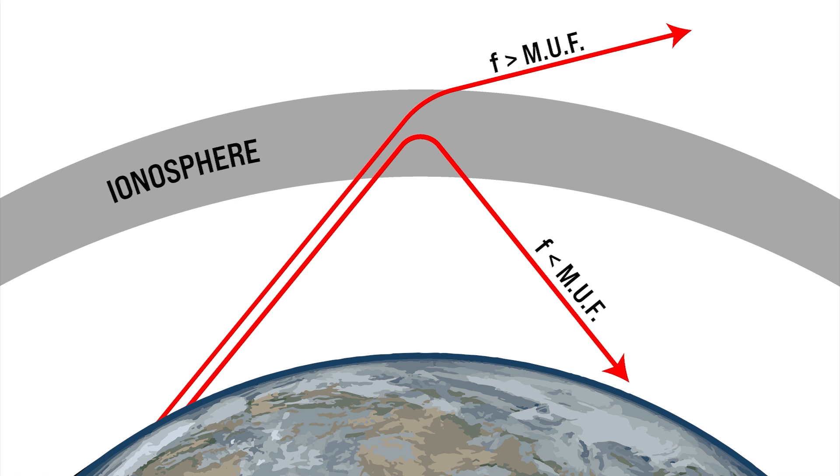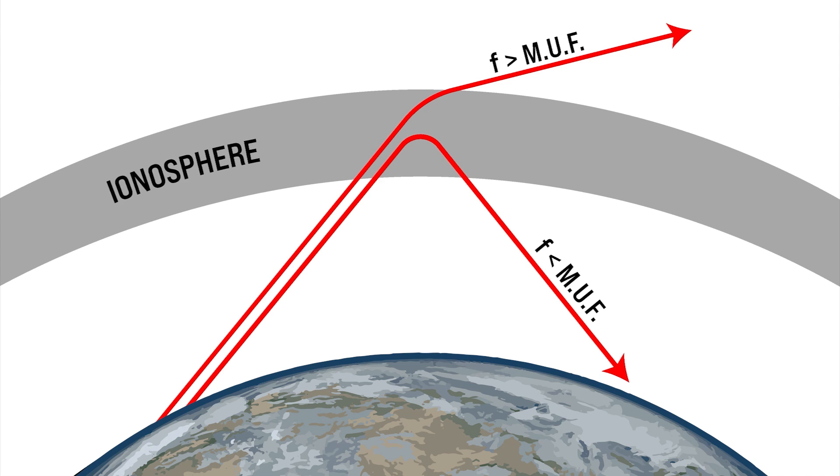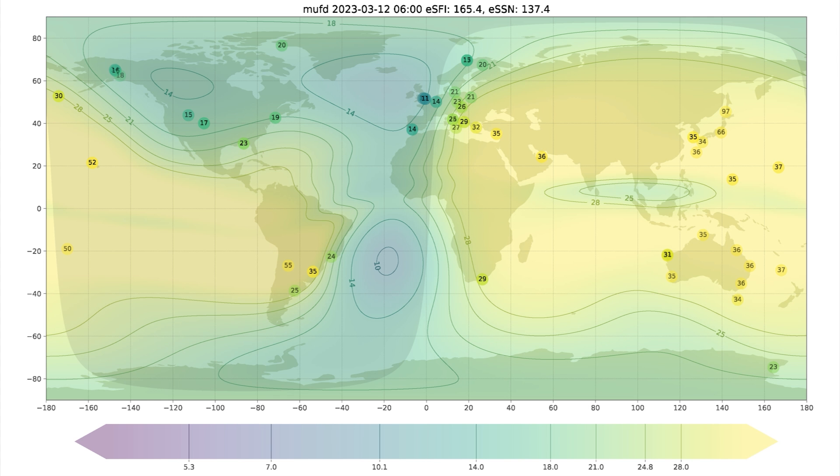So at lower frequencies the E and F layer tend to refract RF back down to earth and the maximum usable frequency or MUF tells us roughly what frequencies begin to penetrate right through and go into outer space instead of coming back down. There's actually a map where we can get this information from. I'll put this link down below and you can play around with it yourself.